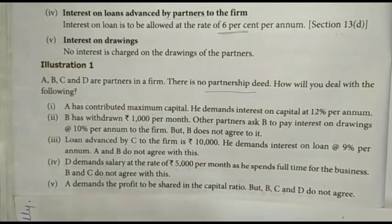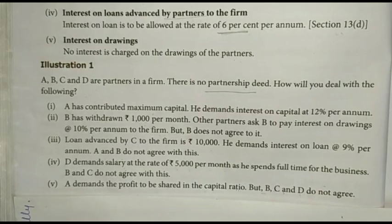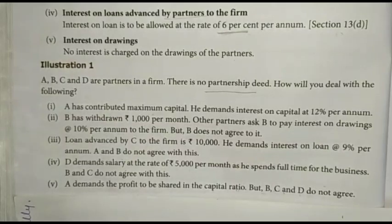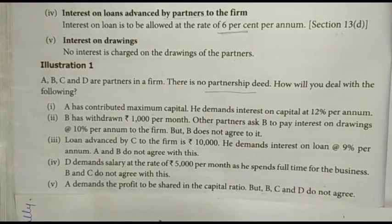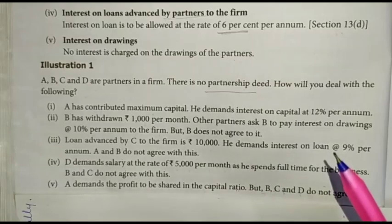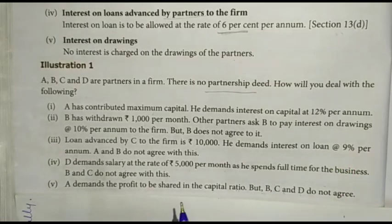For example, there are 4 partners. A invests 2 lakhs while B, C and D each invest 1 lakh. A argues that since he contributed the highest capital, he should get a higher share of profit. However, since there is no partnership deed mentioning the profit ratio, all 4 partners must share profit equally.